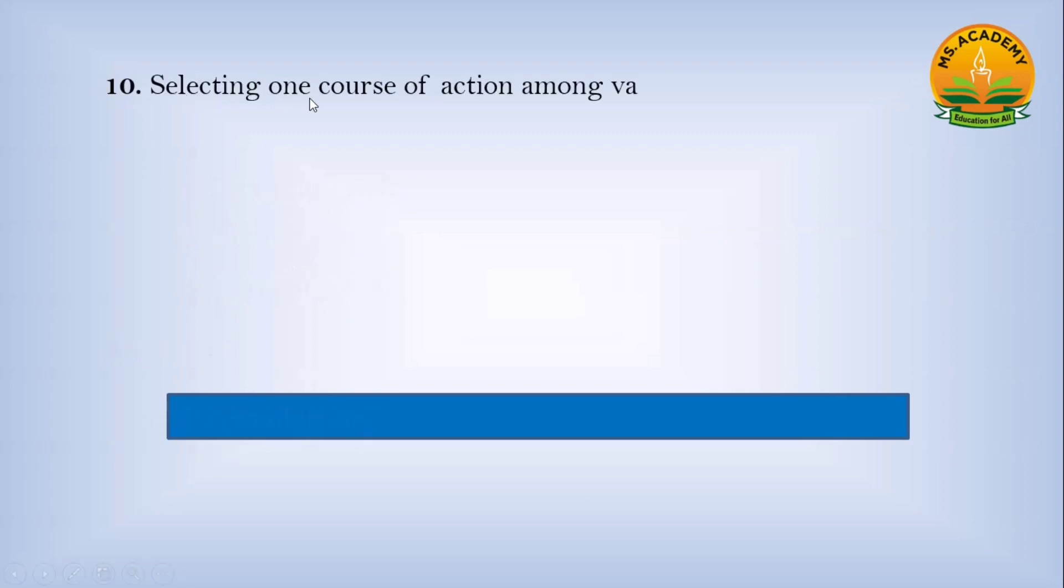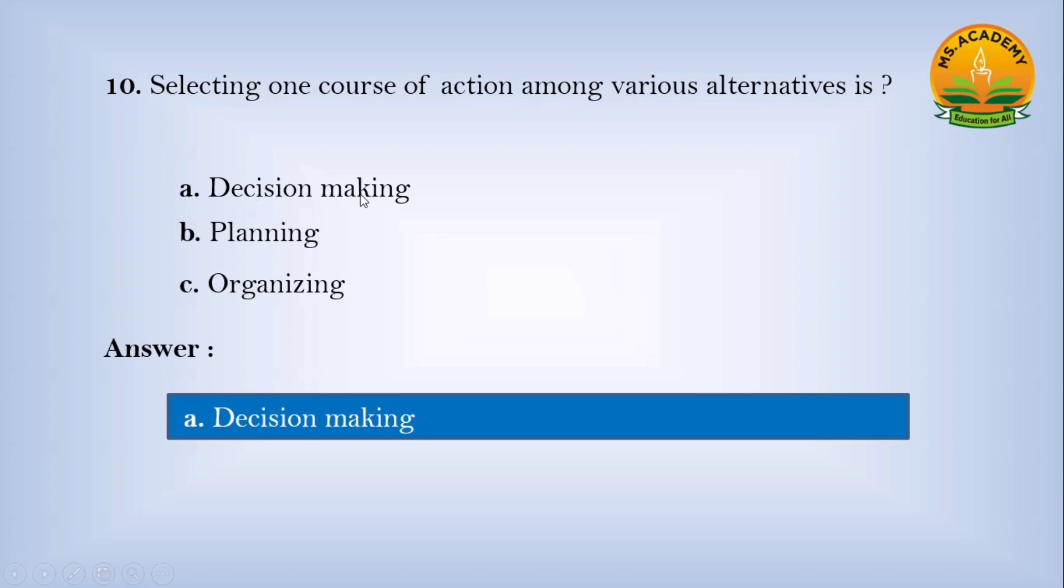Selecting one course of action among various alternatives is: Option a) Decision Making, Option b) Planning, Option c) Organizing. Answer: a - Decision Making.